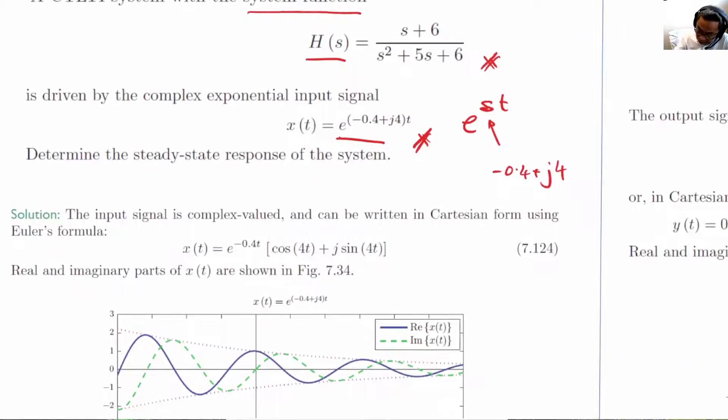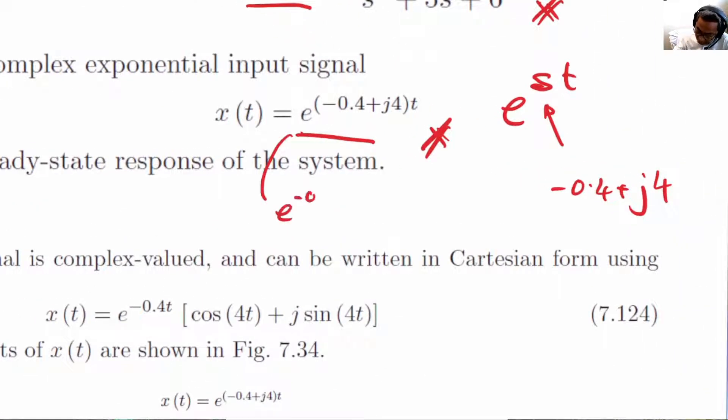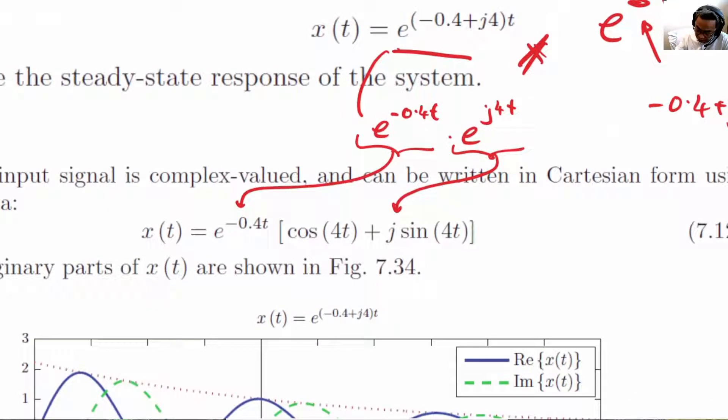You can think of it as e^(-0.4t) multiplied by e^(j4t). So we have a decaying function and we have a complex exponential rotating.